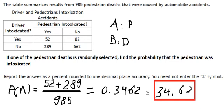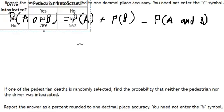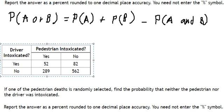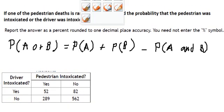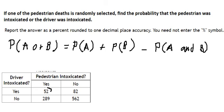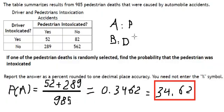I will use the table. For P(A), we have yes from here, so we have 52 plus 289, and we divide by the total, 985.